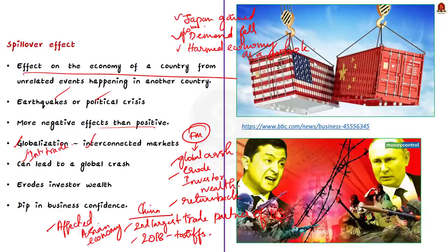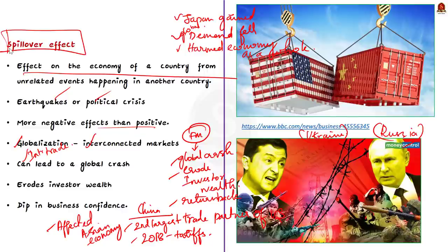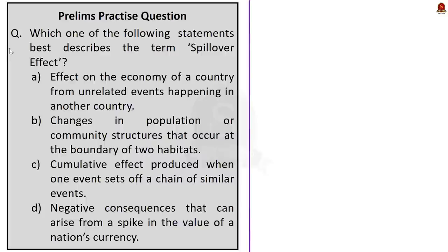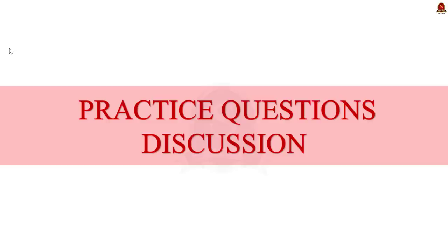Another example is the rising price of crude oil in many countries due to the Russia-Ukraine war — that is also an example of the spillover effect. In this news article discussion, we saw about what the spillover effect is and how it is leading to a decline in India's forex reserves. Now let us move on to the next part of the news article discussion, which is the preliminary practice questions.